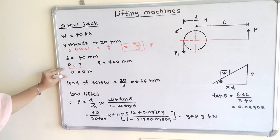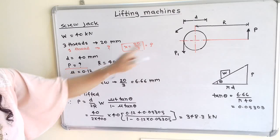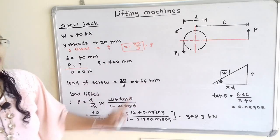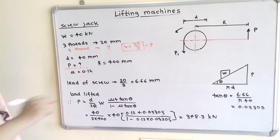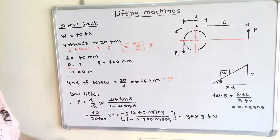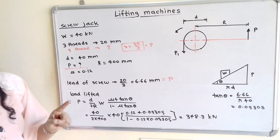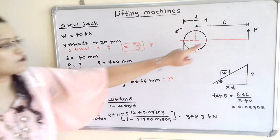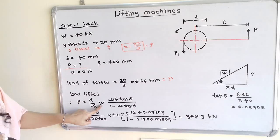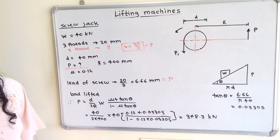Lead of the screw p = 20/3 = 6.66 mm. Since the load is lifted, we use the formula: P = (d/2R) × W × (μ + tan θ) / (1 − μ × tan θ). The value of μ is given as 0.12, but we also need the value of tan θ. Here, θ is the angle of inclination where the opposite side is pitch p and the adjacent side is the perimeter of the screw, π × d.